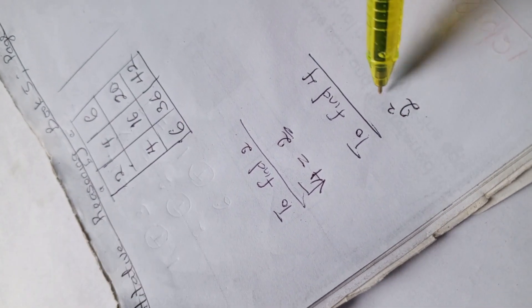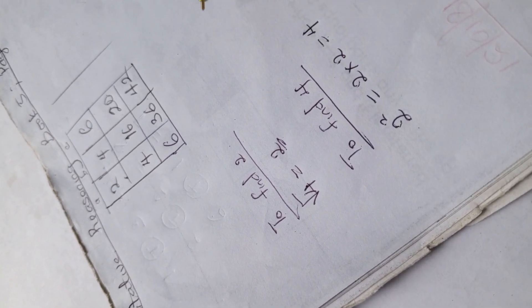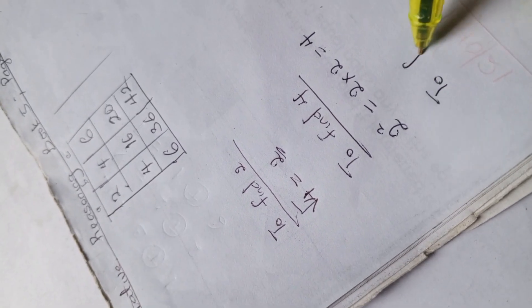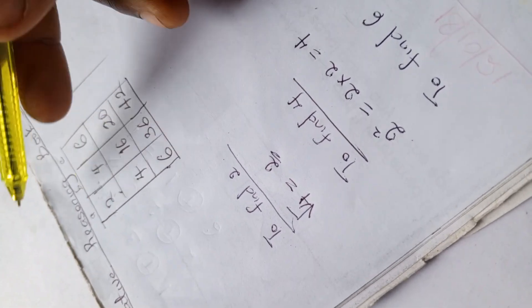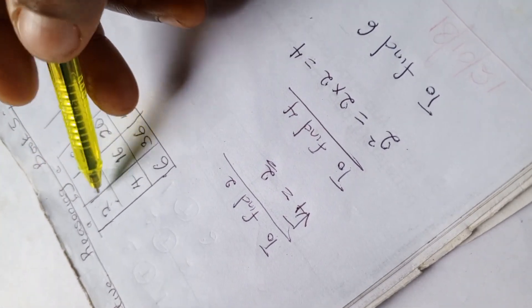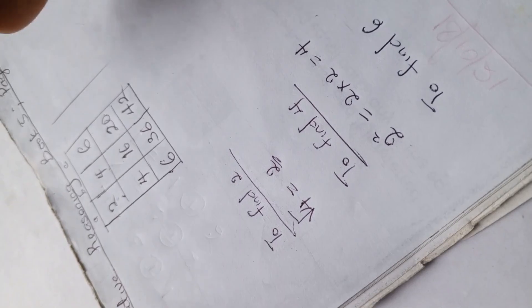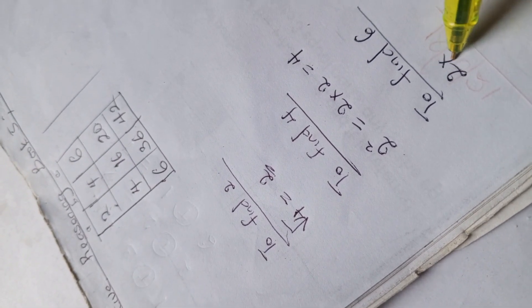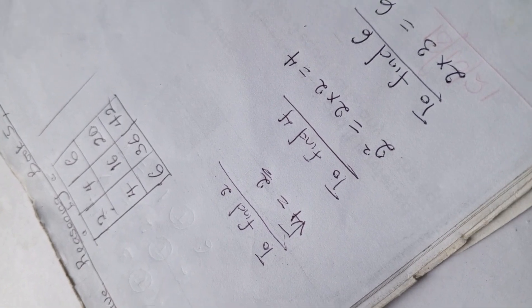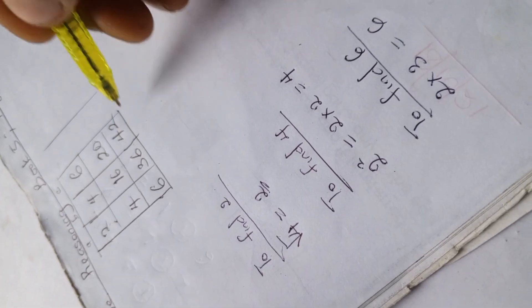And to find six, we're going to have two times the next number after two. If you're counting your numbers, after two we have three, so we have two times three. Two times three is six. So that is it for this.